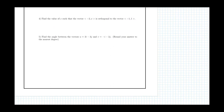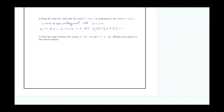In question 4, we find x such that vector (-2, x) is orthogonal to vector (-1, 1). Since u and v are orthogonal if and only if their dot product equals 0, the dot product of (-2, x)·(-1, 1) = (-2)(-1) + (x)(1) = 2 + x = 0, which means x = -2.